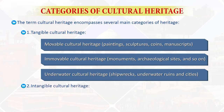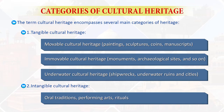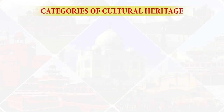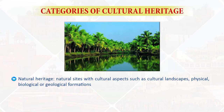The second category is intangible cultural heritage, which includes oral traditions, performing arts and rituals. Natural heritage includes natural sites with cultural aspects such as cultural landscapes, and physical, biological or geological formations. Heritage in the event of armed conflict is another category. Intangible cultural heritage is also termed as living heritage and living culture.